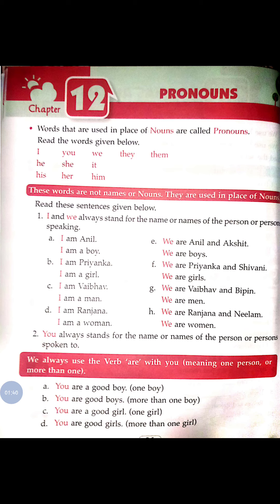'We' is also used, but the difference is: if I am talking about only myself, I will use 'I,' but if any other person is included with me, I will use 'we.' For example: we are Anil and Akshat — two persons are there. We are boys. We are Priyanka and Shivani — we are girls. We are Vaibhav and Bipin — we are men.